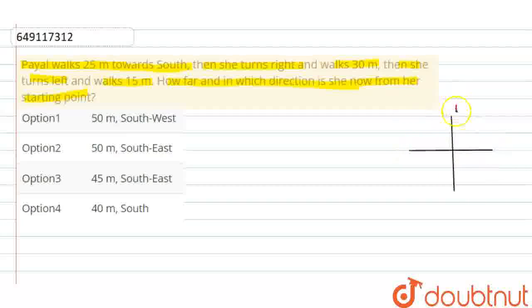Now, this is north, south, east and west. Now, we will find out the starting point. We will place it here. Given that Pyle walks 25m towards south. South means downward, that means this downward is 25m.